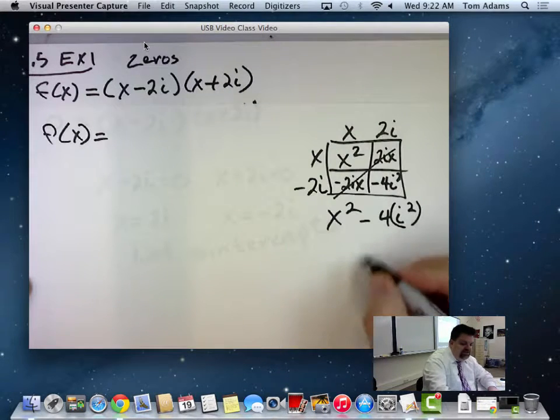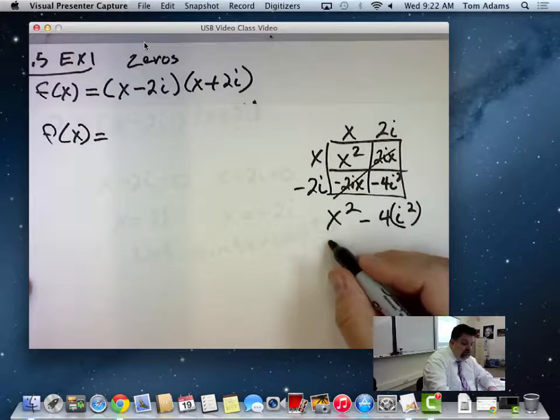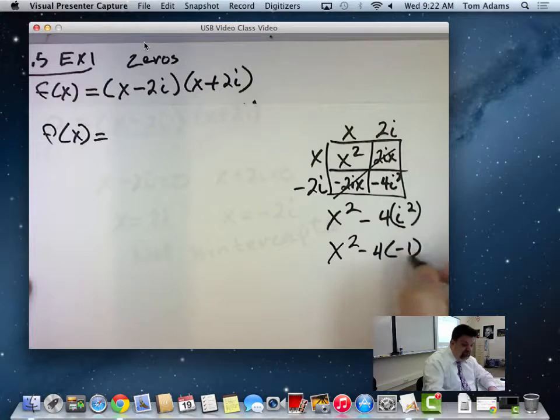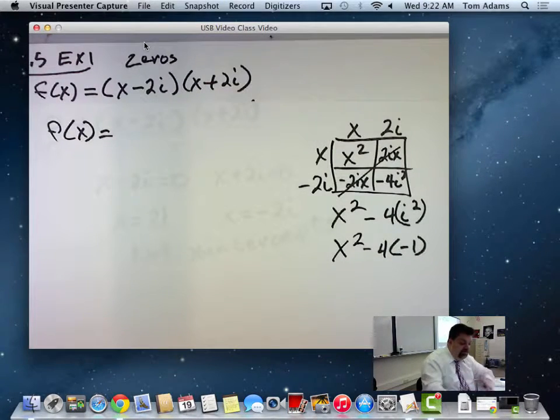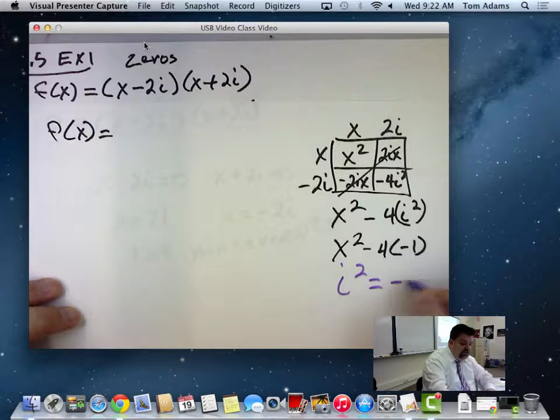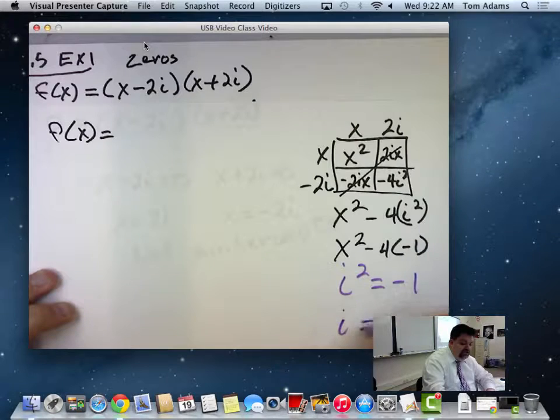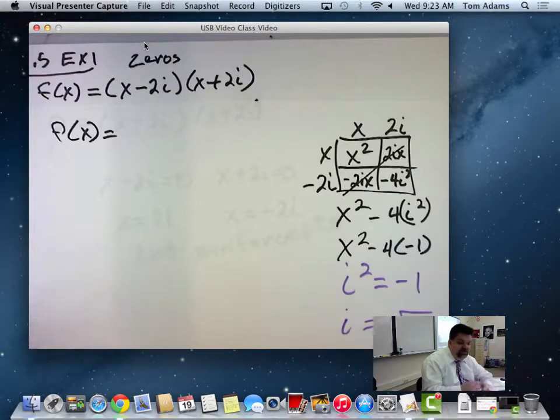But remember, guys, that i squared is equal to what? Negative 1. So I've got x squared minus 4 times negative 1. All right? So you guys remember that? i squared is equal to negative 1 because i is equal to the square root of negative 1. And so if you square both sides, you get this.